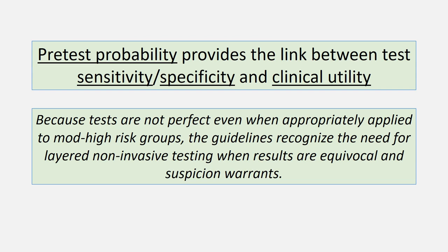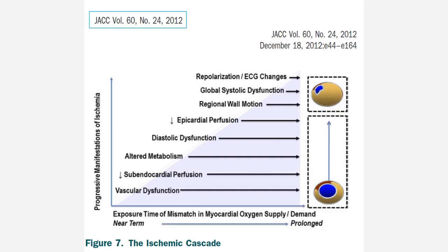Although we just saw how we can get into trouble applying non-invasive stress testing to very low and very high risk populations, the tests are very good for intermediate risk patients, and the pretest probability provides the link between test sensitivity and specificity and clinical utility. Because tests are not perfect, even when appropriately used, the guidelines recognize the need for complementary testing or escalation to invasive testing when results are unexpected or inconclusive. The sensitivity and specificity of stress testing is determined by the physiology of the ischemic cascade—the last phase of which is a change in ECG repolarization, explaining the limited role of plain ECG stress testing with exercise in patients with increased risk, though this test can be very helpful in low risk patients who can exercise well and have normal baseline ECGs.